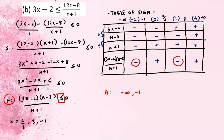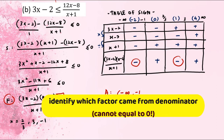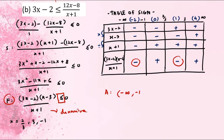The region is negative infinity up until negative one — but careful: even though you have an equal sign, negative infinity always uses an open bracket, and negative one must also be excluded because it's in the denominator, and the denominator cannot equal zero. Then union with [2/3, 3] — both 2/3 and 3 can be included. That is your final answer.